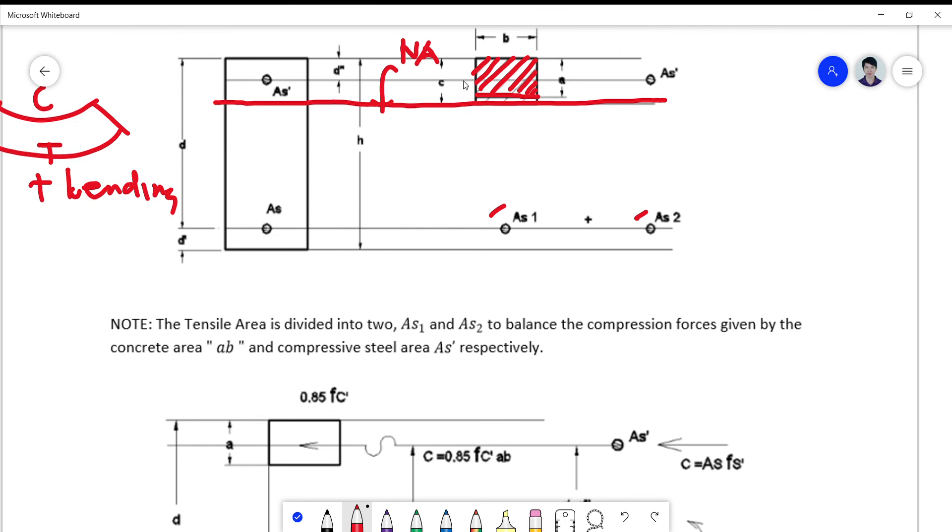the compression block that we are normally using in the single reinforced analysis. And As2 is balanced by the additional reinforcement brought about by the steel area in compression.